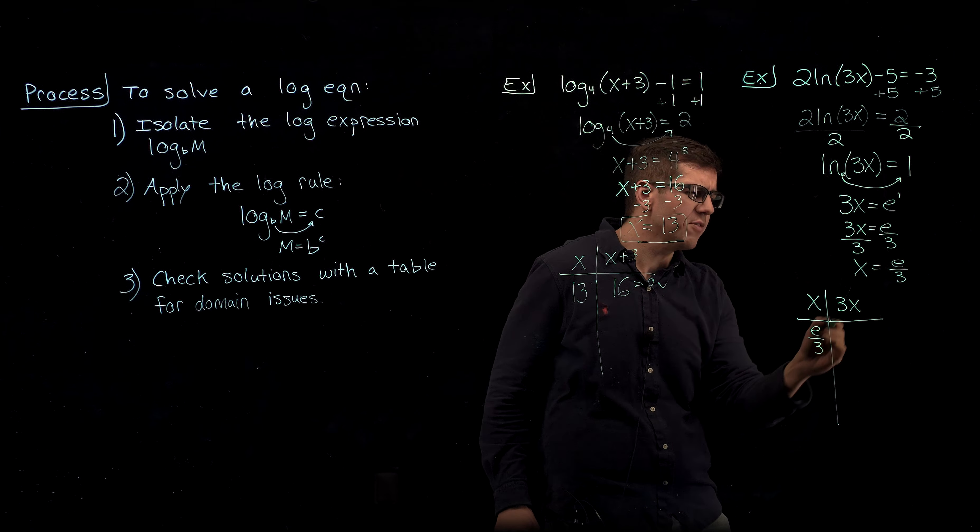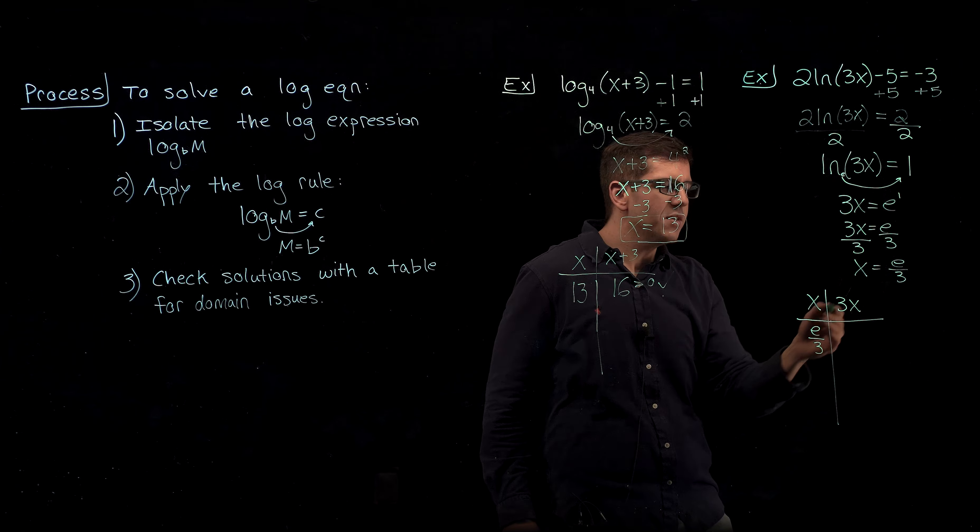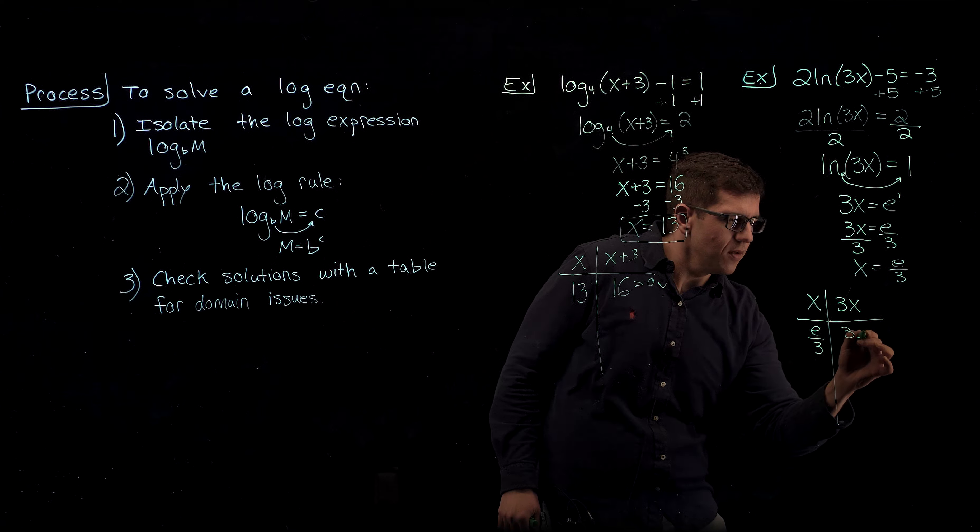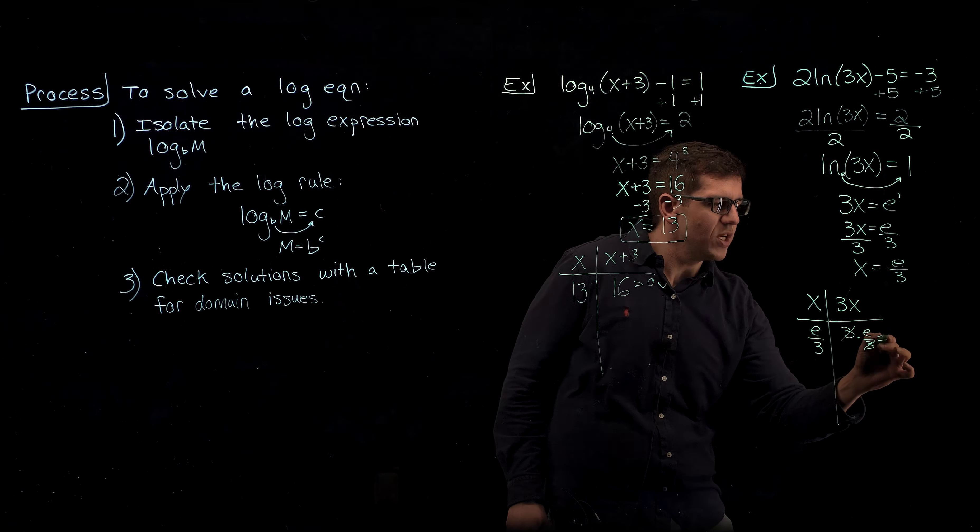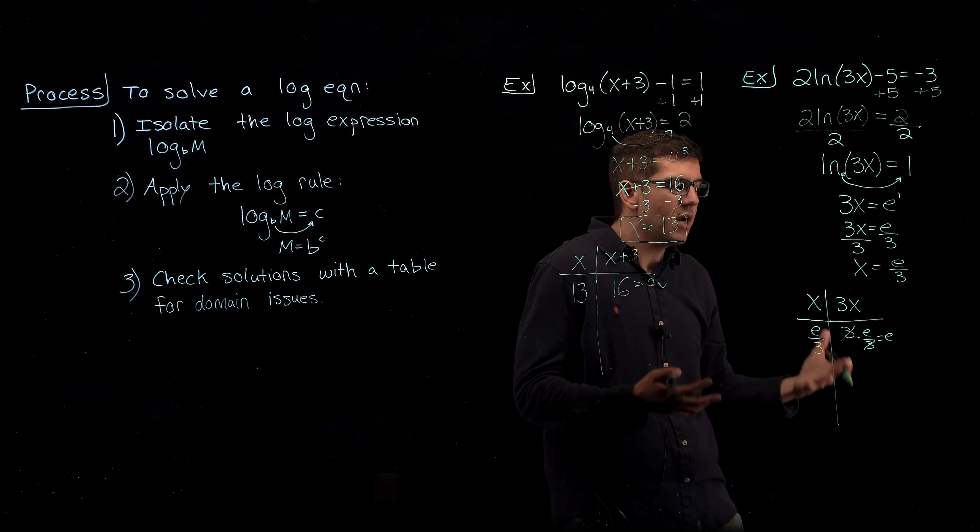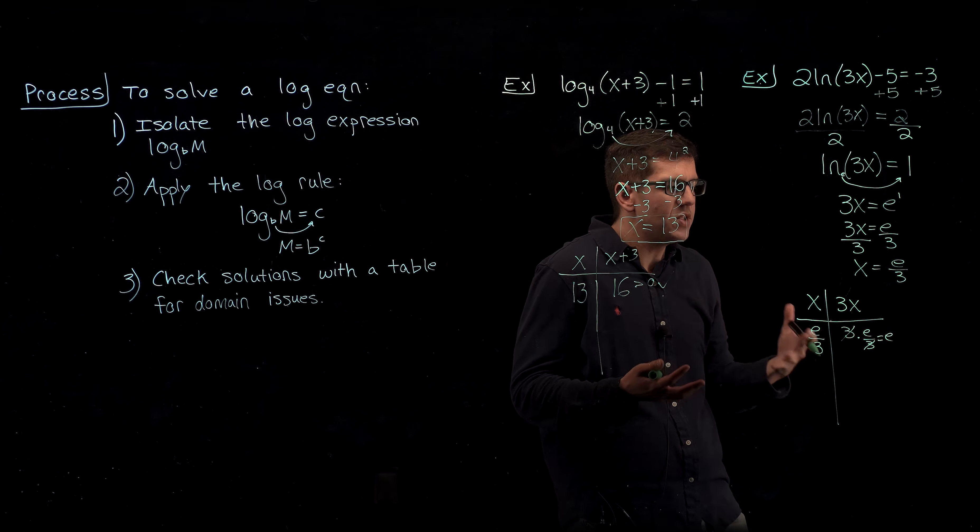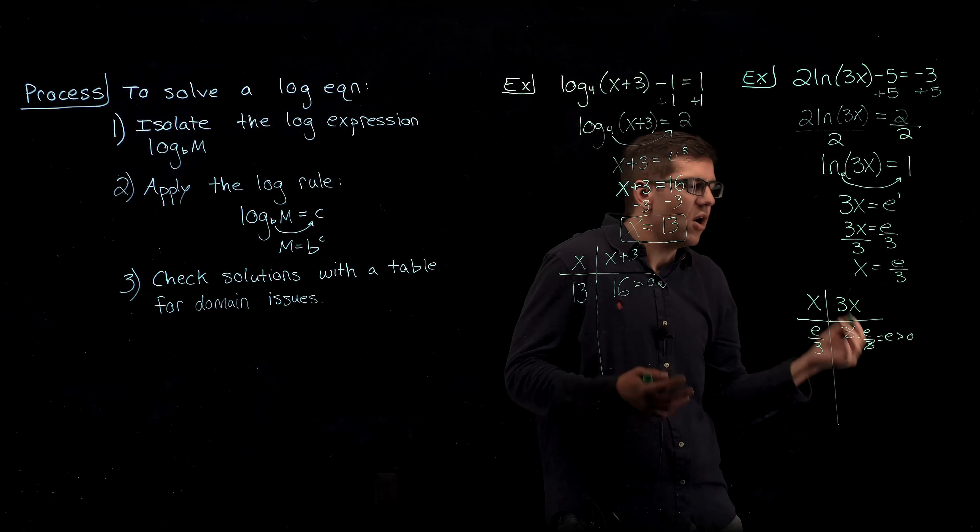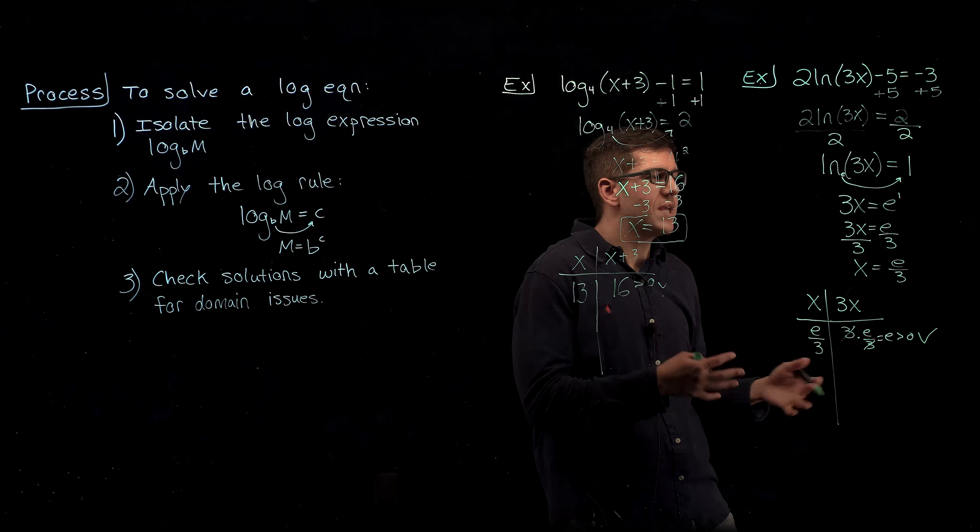If we plug e over 3 into 3x, this 3 times this e over 3, the 3s will cancel out, leaving us with just e. And e is a positive number. It represents a number approximately equal to 2.7. That is greater than zero. That's all we need to know. So our table check works out. This confirms that this is a solution to the original problem.